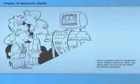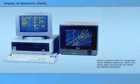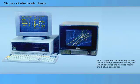ECS is a generic term for equipment which displays electronic charts, but which does not and will not satisfy the SOLAS convention. ECS cannot be used as a substitute for official paper charts, and an up-to-date paper chart must therefore be available. Examples of ECS include radar systems incorporating video maps, stand-alone video plotters, and all current commercial raster chart and vector chart display systems.